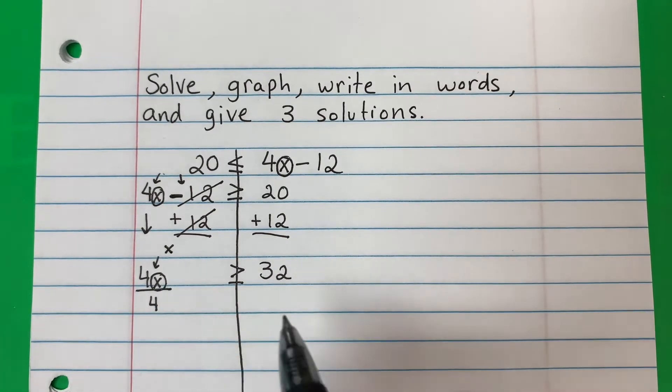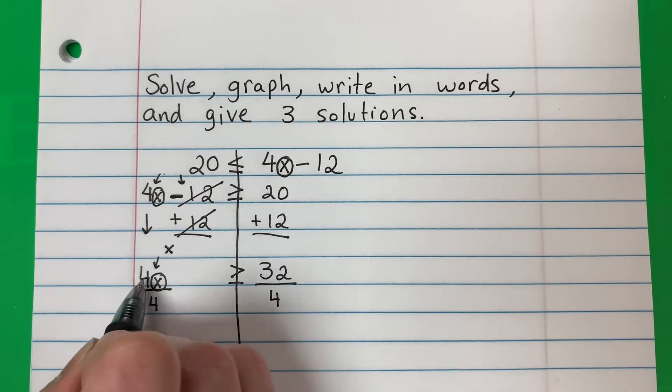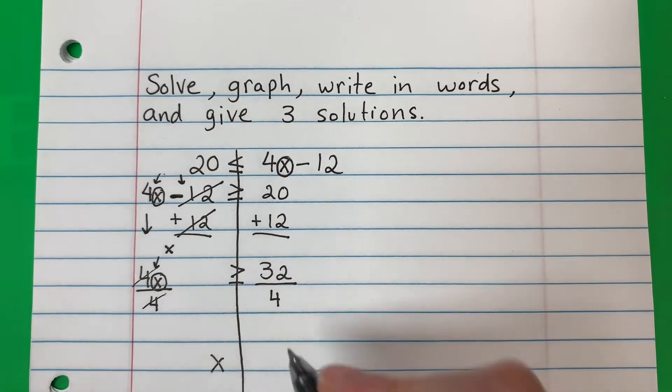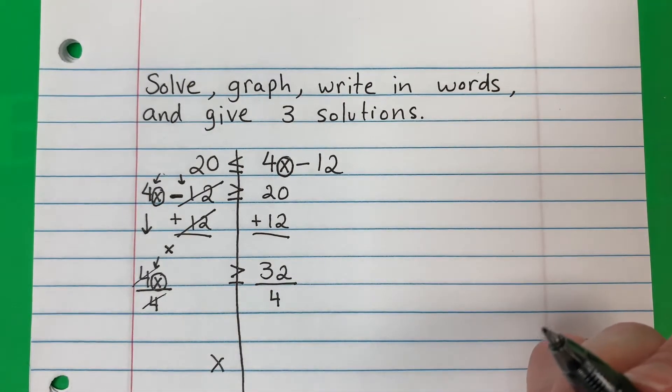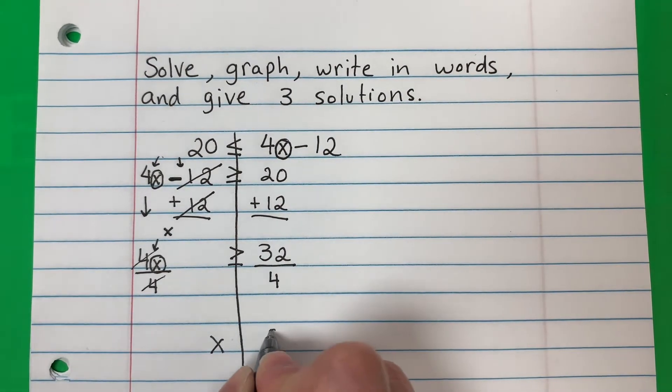Okay, this opposite we're going to copy. So divide by 4. 4 divided by 4 is 1. Cancel. Copy X. Okay, 32 divided by 4, put in the calculator, it's going to be 8.